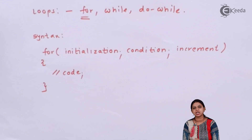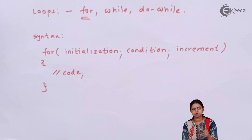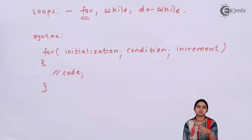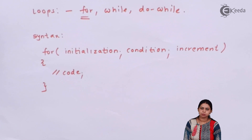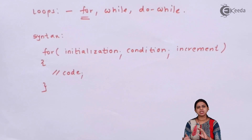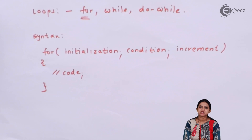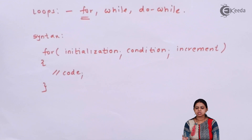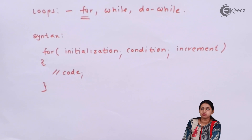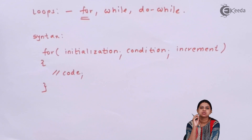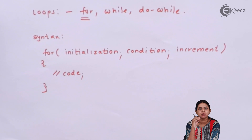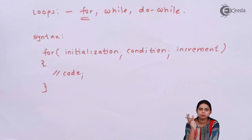We use either the increment operator (++) or the decrement operator (--), which we studied when we covered operators. The ++ is called the increment operator and the -- is called the decrement operator. This is the syntax of the loop, but you won't fully understand it without an example, so let us take one example to understand how the loop actually works.